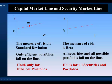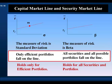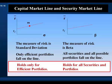Let's review the difference between the capital market line and the security market line. The measure of risk of the capital market line is standard deviation — total risk. For the security market line, the measure of risk is beta — systematic market risk, the risk that is priced by the market. For the capital market line, only efficient portfolios fall on it. All securities and all possible portfolios fall on the security market line. The security market line holds for all securities and all portfolios.